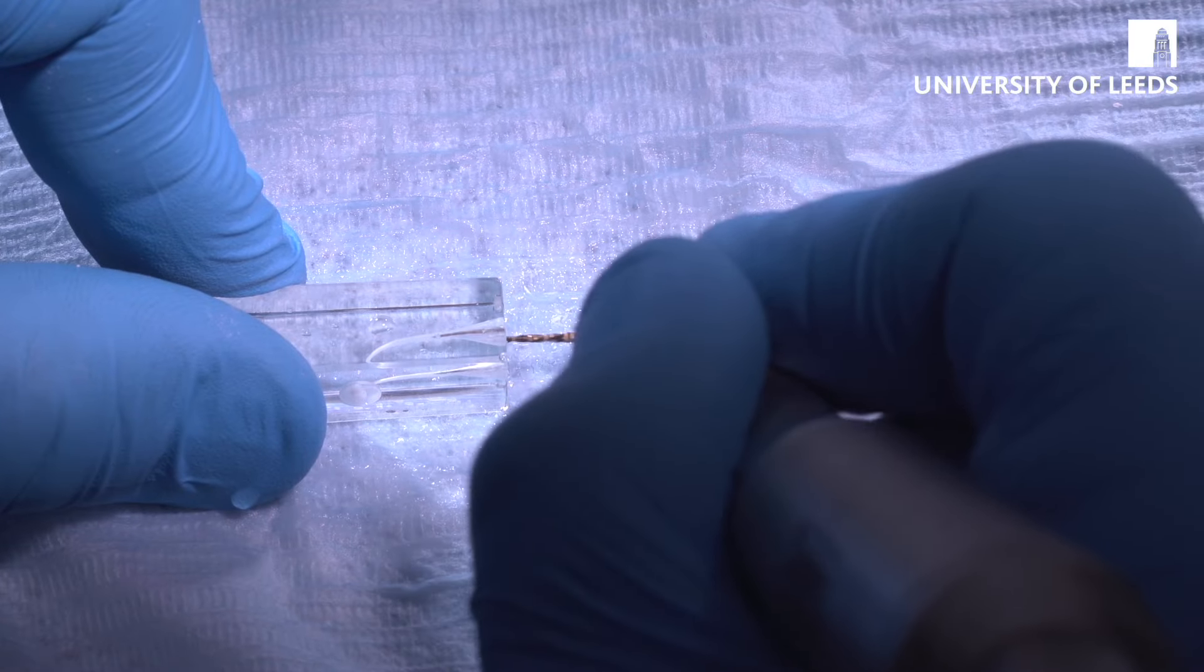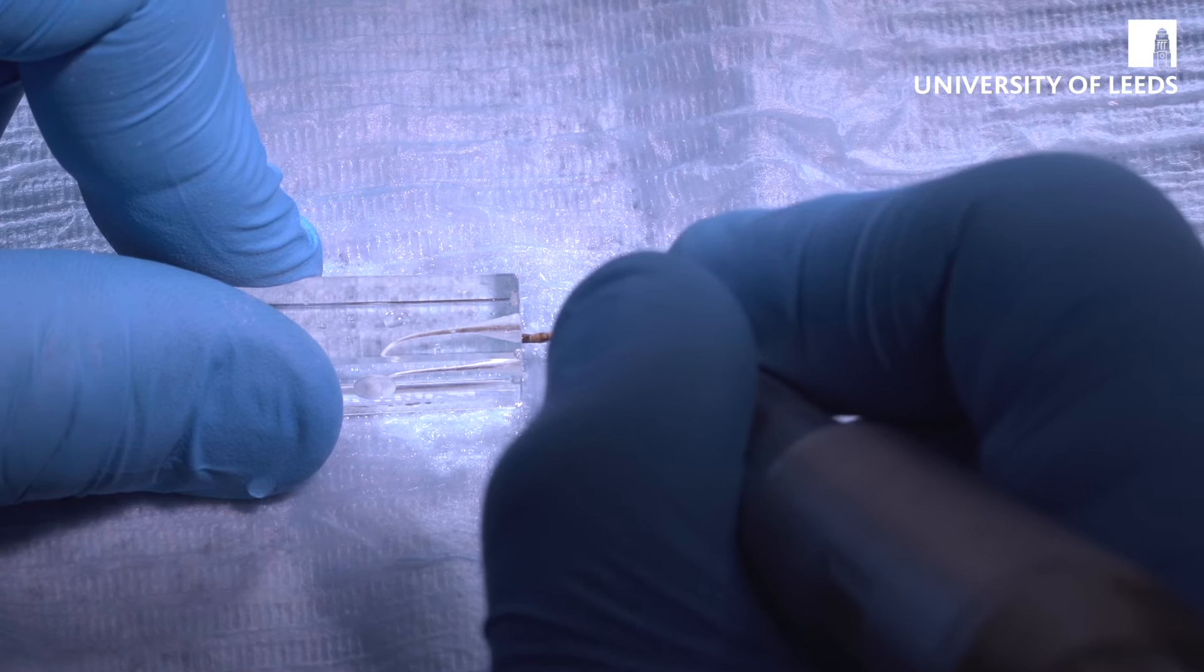Three passes, irrigate, patency file, and then put back in again. And this time it should go almost completely to length, which it does. So now we're going to finish off, so take it fully to length.